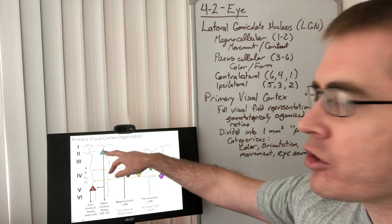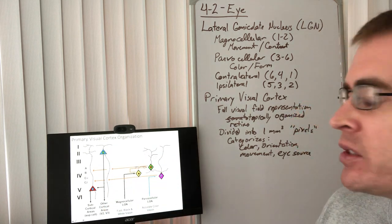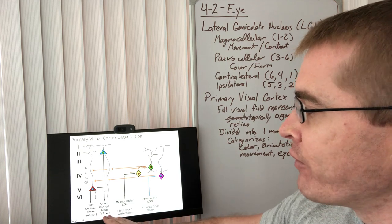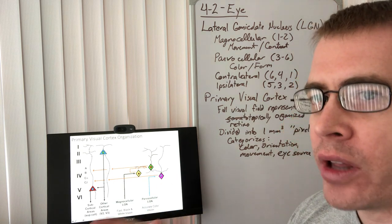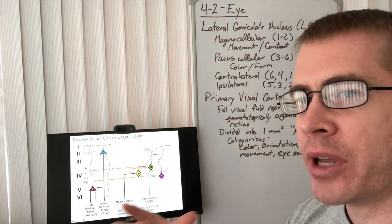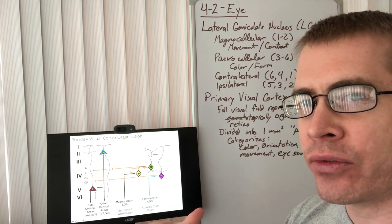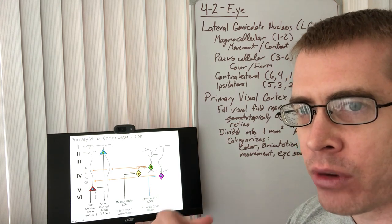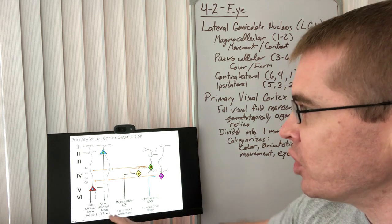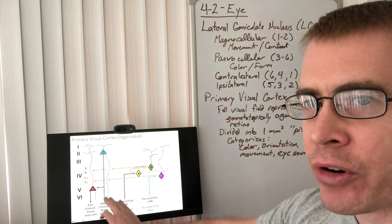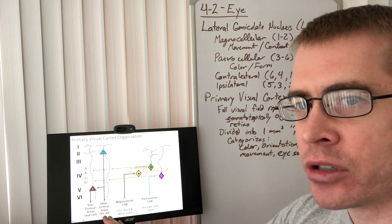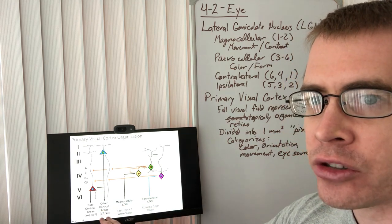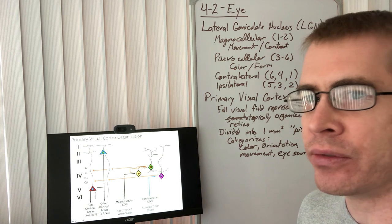Layer two neurons are association neurons. They send that information to other cortical areas for that information to be associated with other information we're receiving or that we understand from our memories. So V1, the primary visual cortex, is sending this information to the secondary and the tertiary association fields.